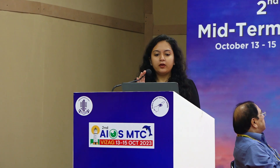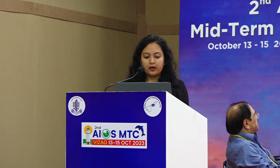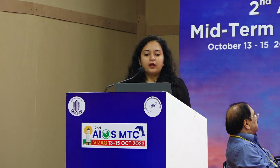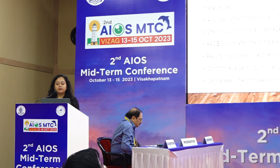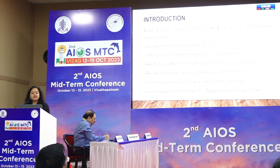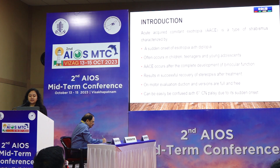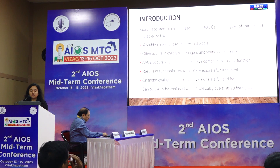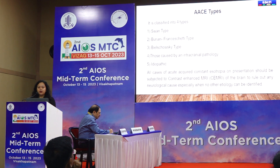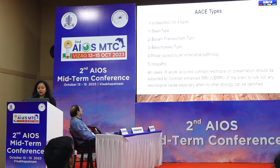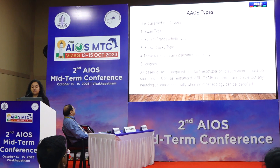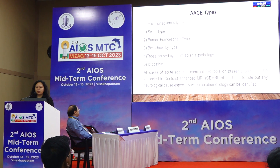Good morning everyone. Obscure intracranial pathology manifesting as acute acquired comitant esotropia (AACE) — my experience at NARIO in Telangana. I am Dr. Devika Saxena; my guide is Dr. Vaira. Introduction: AACE is characterized by sudden onset of esotropia with diplopia, often occurring in children, teenagers and young adolescents. It occurs after complete development of binocular function, usually with successful recovery of stereopsis after treatment. It can be confused with sixth nerve palsy because of sudden onset; motor evaluation for full and free ductions is necessary. It is classified into four types: Swan, Bonne-Franceschetti, Burian-von Noorden, those caused by intracranial pathology, and idiopathic. A contrast-enhanced MRI is required to rule out neurological causes.